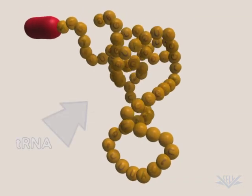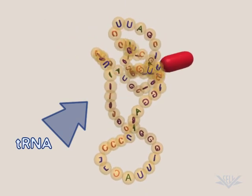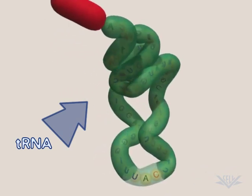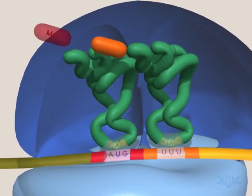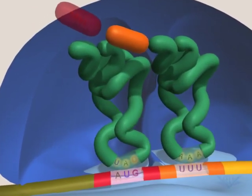transfer, or tRNA, and ribosomal, or rRNA. These are all important components of the process called translation that is used to make proteins.